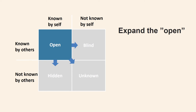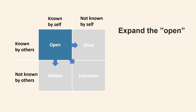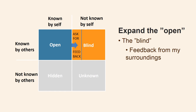It is widely believed that we need to expand the open quadrant as far as possible, as it provides better communication between us. We believe disclosure to be healthy — at least that's the impression one gets after reading Freud. However, my common sense tells me that it is not everything that all others should know about me, and I don't want to know everything about others. Here are some examples of how to expand the open quadrant. I can move a part of the blind quadrant into the open quadrant by asking for feedback from my surroundings. People might tell me that I am touching my hair when I say something, that I have wandering eyes when talking to them, or that I am actually interrupting them — then it would become part of the open quadrant.